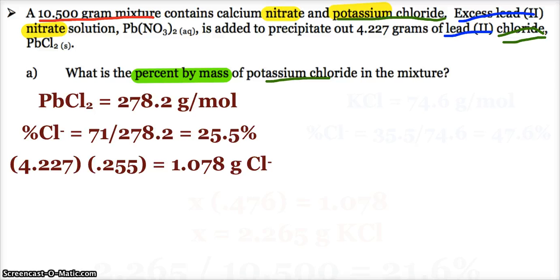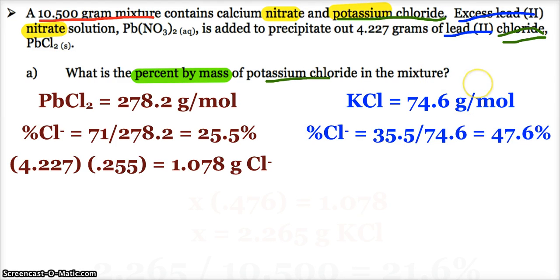So since it all came from that, let's analyze potassium chloride a little bit. Potassium chloride, molar mass, 74.6. It also has a percent chloride that all potassium chloride has. It is 47.6%.